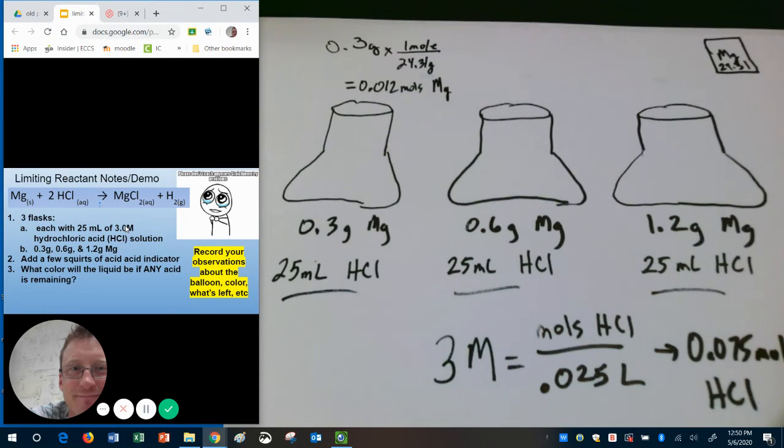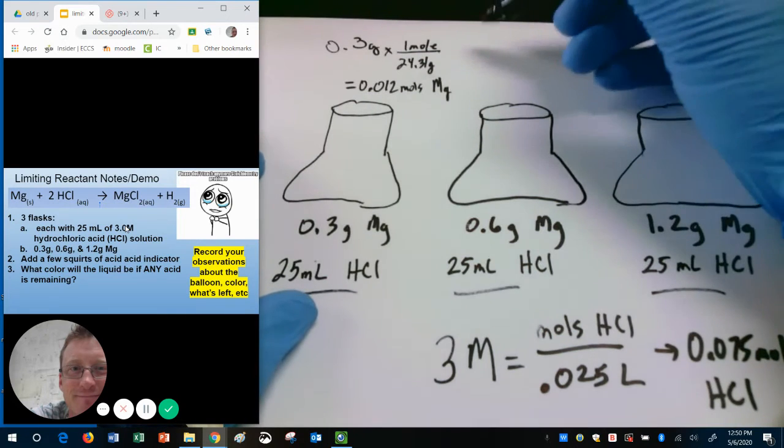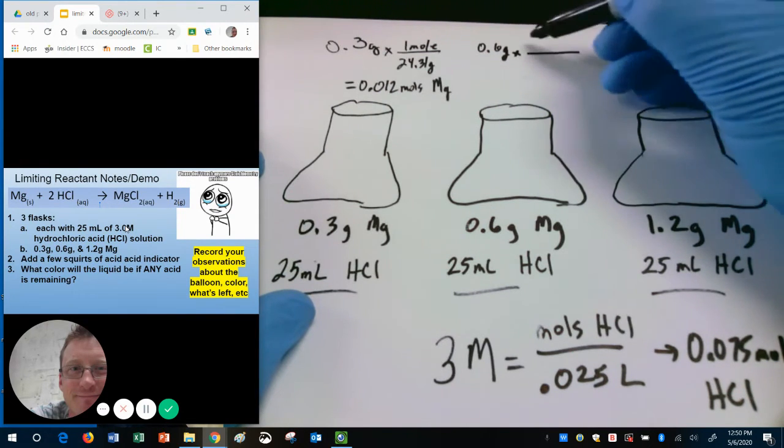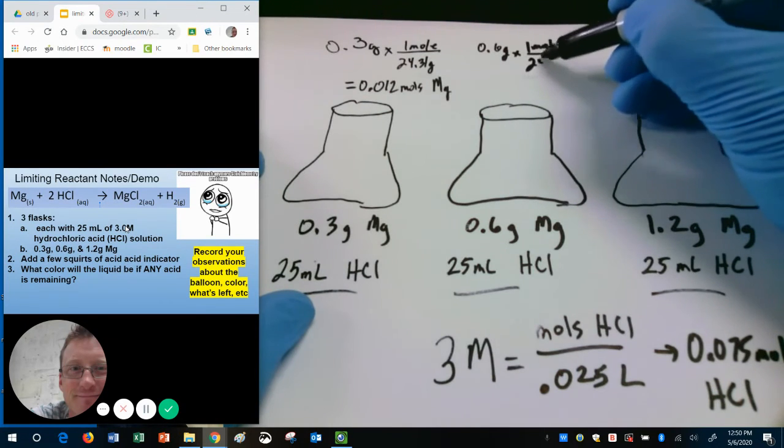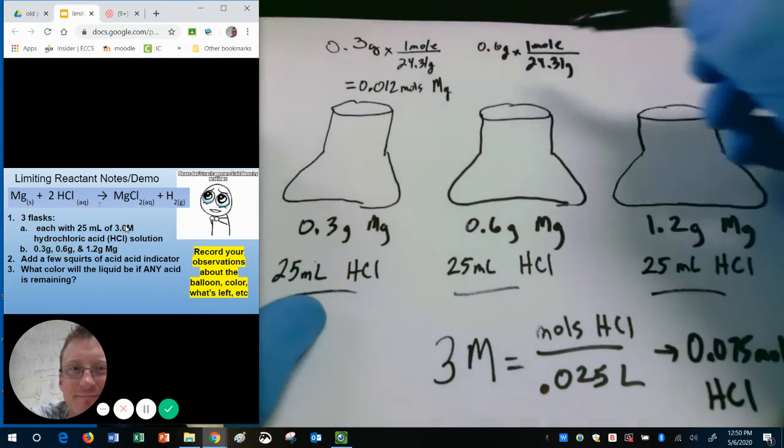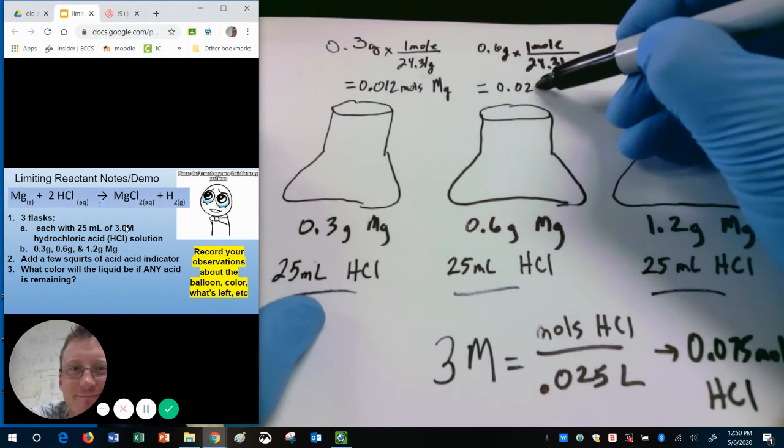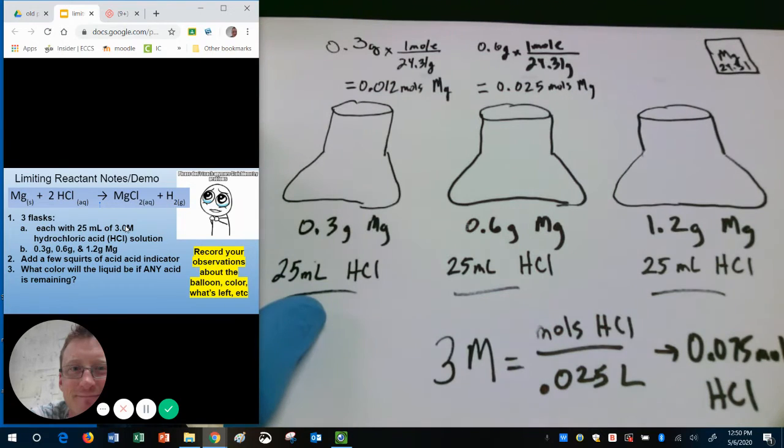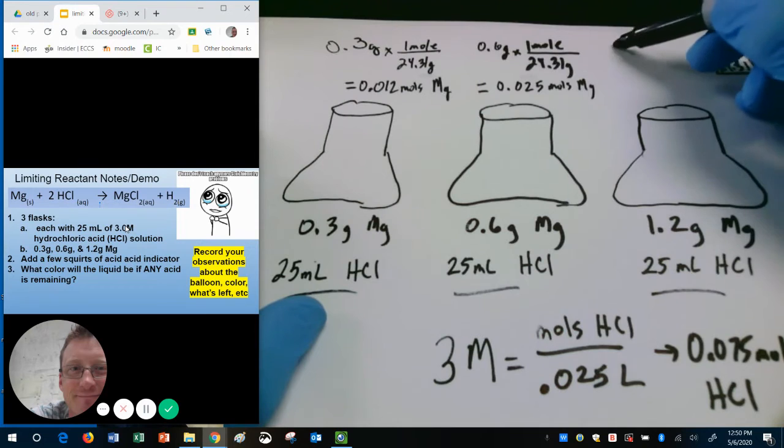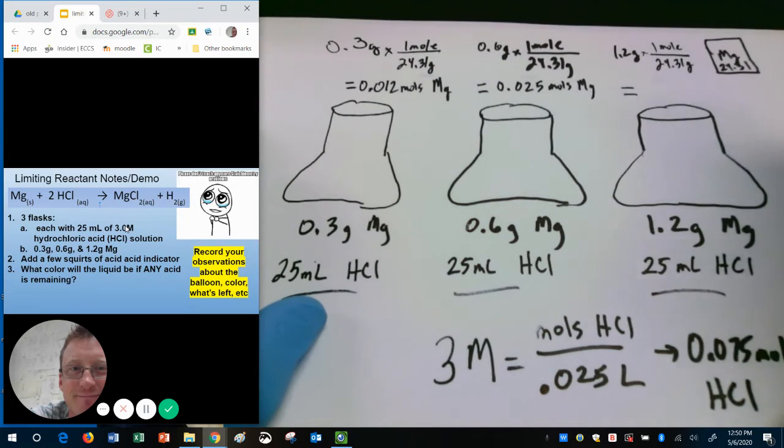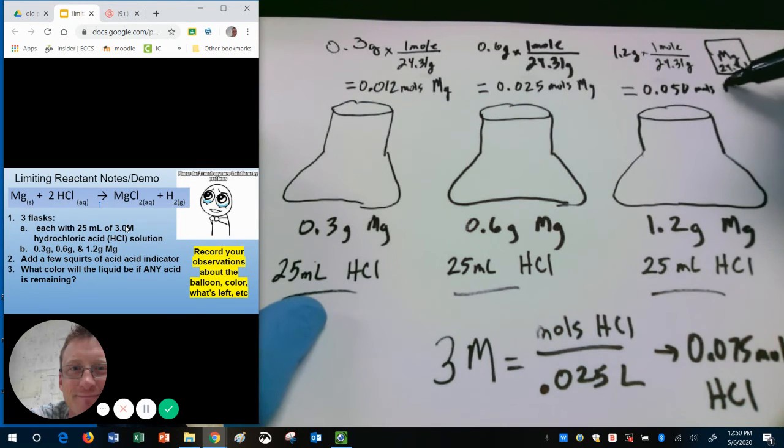Now I need to do the same thing for the other ones. Same math, same element, except I have a different starting mass. I have 0.6 grams times one mole over 24.31 grams. When I solve that, I get 0.025 moles of Mg. Same thing for the other one, except I have 1.2 grams. I am going to multiply that, one mole over 24.31 grams. When I solve for those, I get 0.050 moles of Mg.